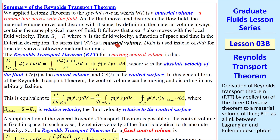If you're still a little confused, I summarized the Reynolds Transport Theorem here. What we've done is applied Leibniz Theorem to the special case in which V is a material volume. By definition, the material volume always contains the same physical mass of fluid. uA is equal to u since the volume moves with the fluid. V(t) is a material volume, and we use capital D's for derivatives. Note that u is the absolute velocity of the fluid, CV is the control volume, and CS is the control surface. This equation is very general, and the control volume can be moving and distorting in any arbitrary fashion.